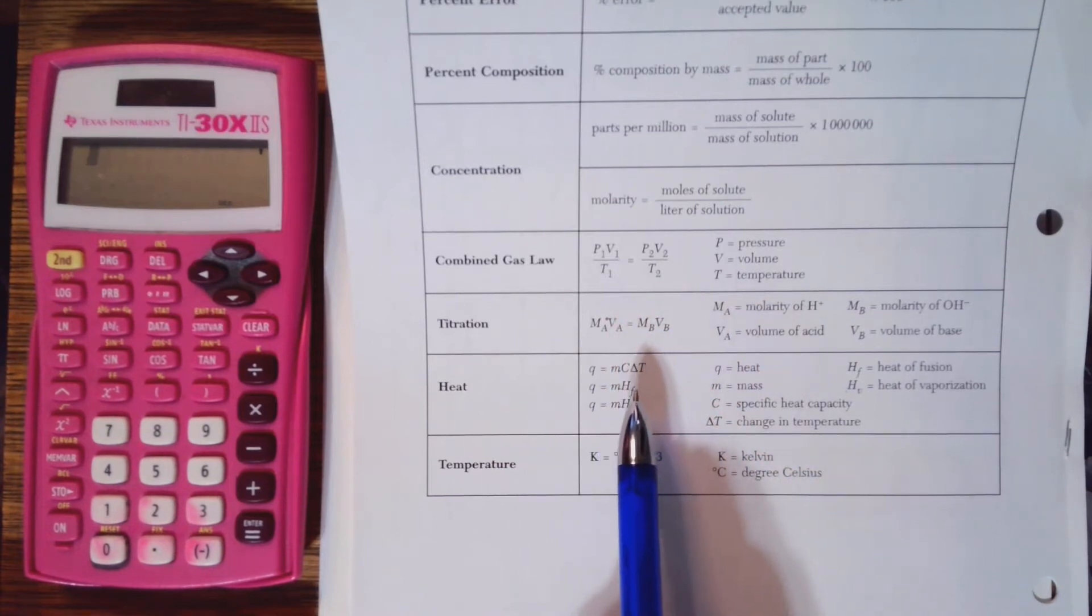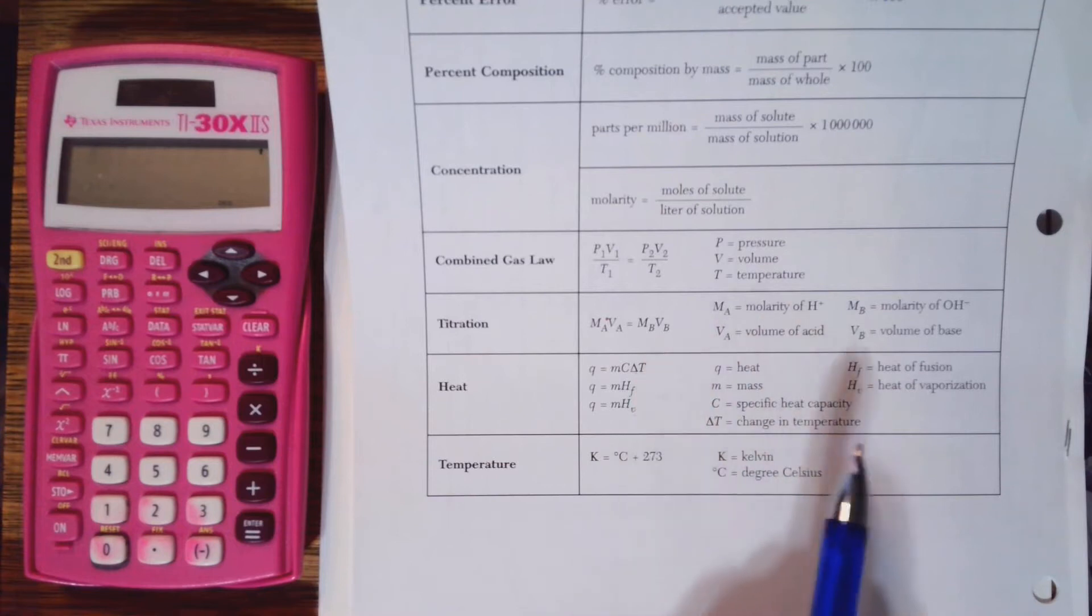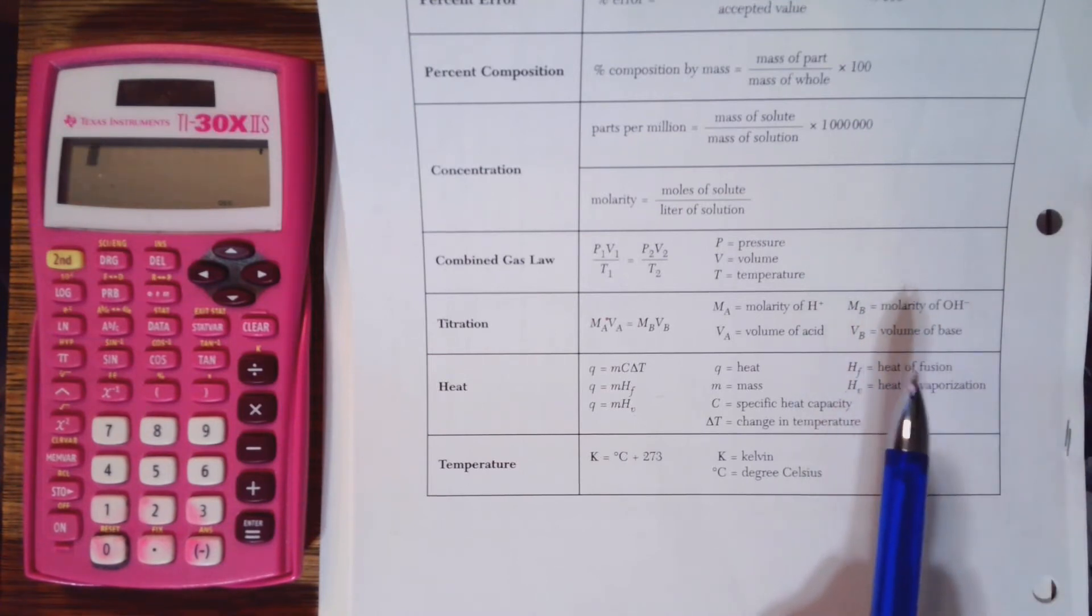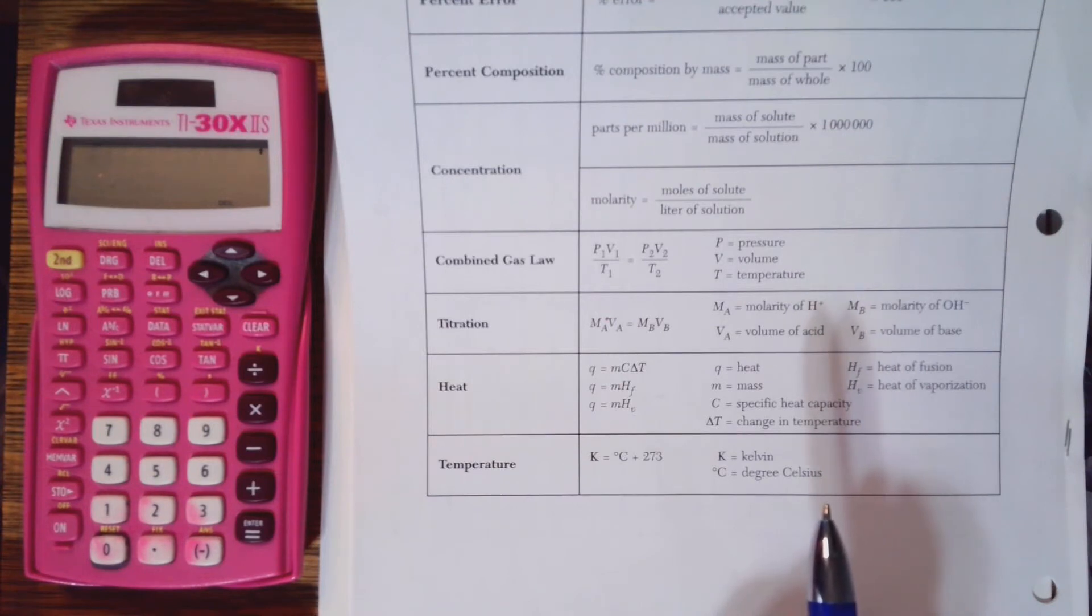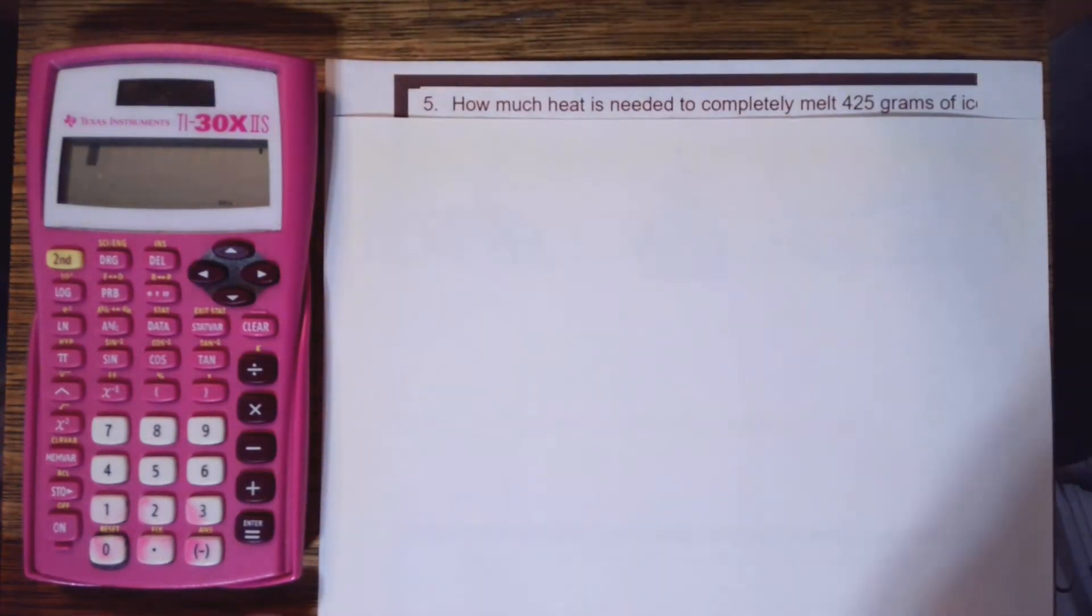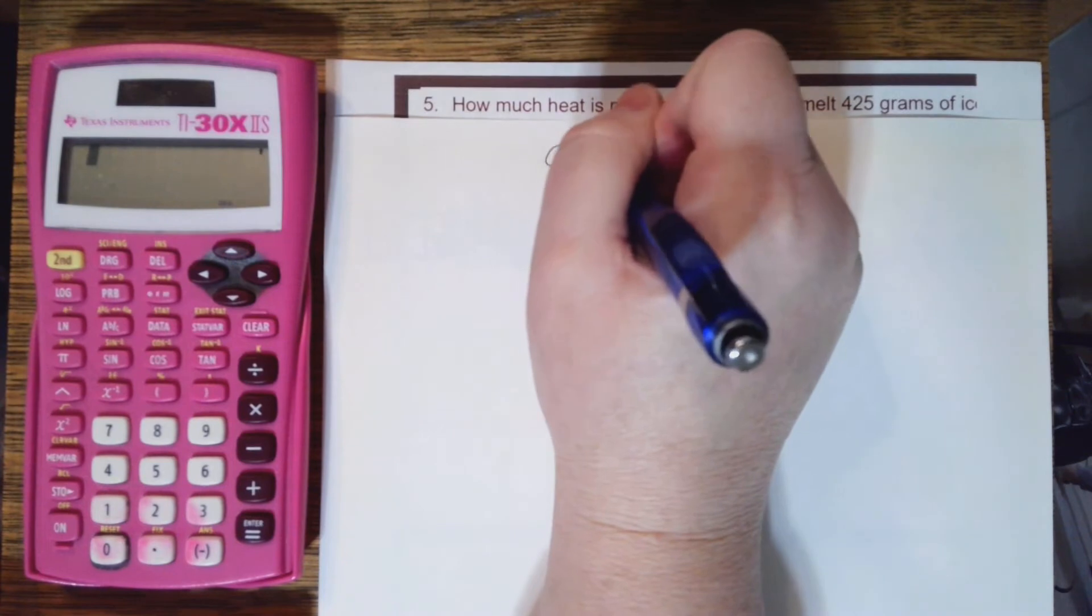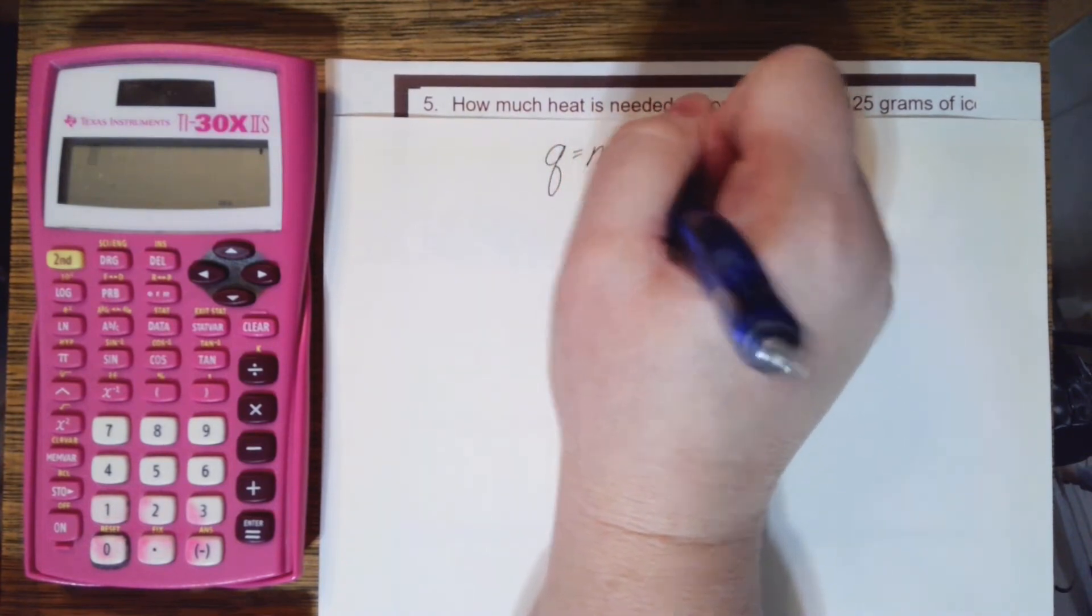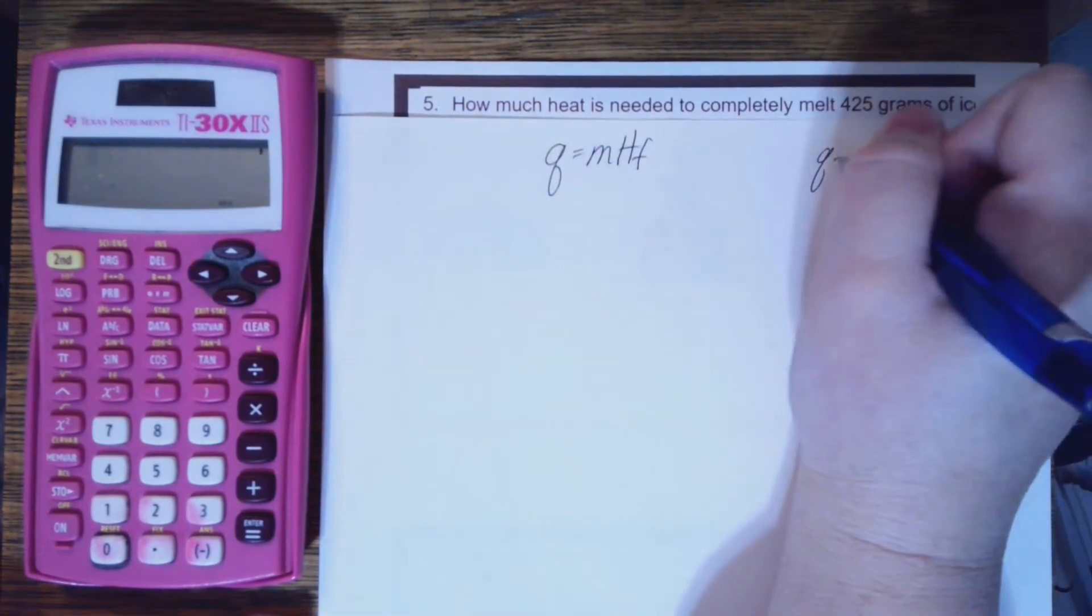So I have two left: one has Hf and one has Hv. Hf is heat of fusion, Hv is vaporization. Well, I can remember it one of two ways: you can remember that fusion means melting, or you can remember that vapor is a gas and melting has absolutely nothing to do with the gas. So I'm going to be using the heat of fusion formula. So I'm going to write the formula first: q equals m Hf. Write my list of variables.